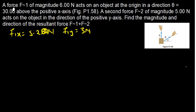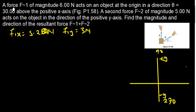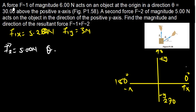F2 has a magnitude of 5 Newtons and acts in the direction of the positive x-axis. When dealing with vectors, if a vector points toward the positive y-axis, the angle is 90 degrees. If it points toward the negative y-axis, the angle is 270. If it points toward the positive x-axis, the angle is 0 degrees. If it points toward the negative x-axis, the angle is 180. In this case, they are saying F2 is pointing toward positive x-axis, so the theta is 0 degrees, and the magnitude is 5.00 Newtons.